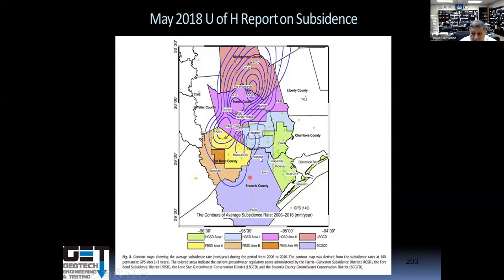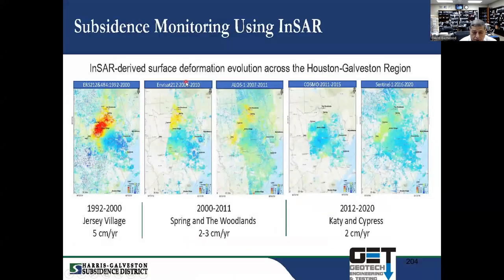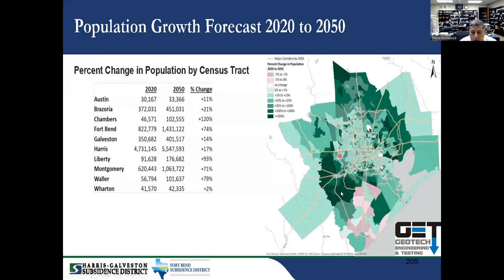In the Houston area, subsidence in Jersey Village was about 5 centimeters — two inches per year — between 1992 and 2000. Between 2000 and 2011, the Spring-Woodlands area dropped about one inch per year. In 2012 to 2020, the Katy area dropped about 0.75 inch per year. As population grows and more groundwater is used, more subsidence will occur. Brazoria County is projected to grow 21% by 2050, Chambers County by 120%, Fort Bend by 74%, Galveston County 14%, Harris County 17%, Montgomery County 71%, and Waller 79%.